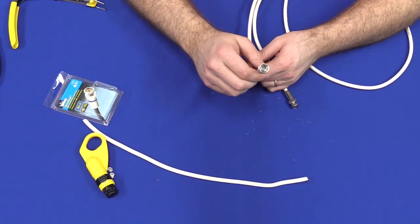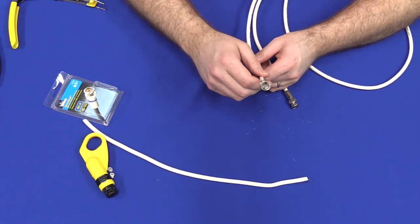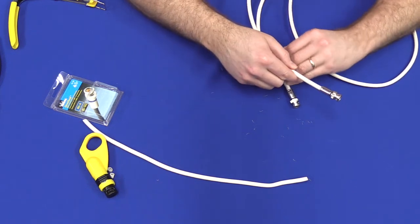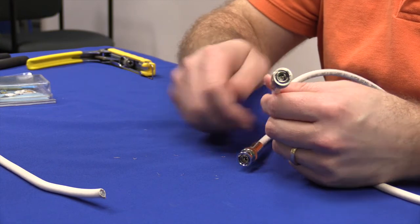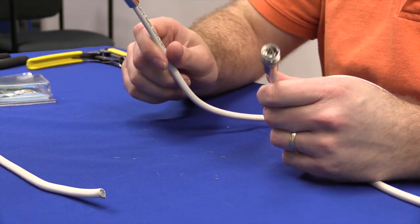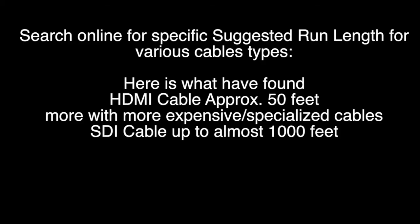This is called coaxial cable or coax cable. You're able to run an SDI video signal through coax cable for a few hundred feet. This makes it a great option for video production. Different cables have different run lengths. Make sure that you check the run length of the cable that you are using to make sure that it is sufficient for the job that you are doing.